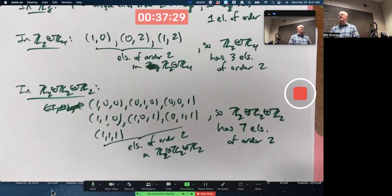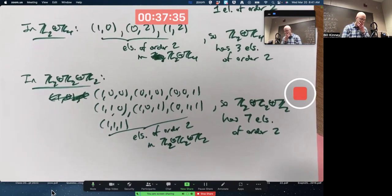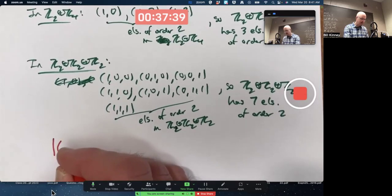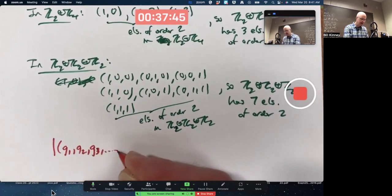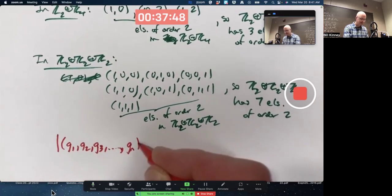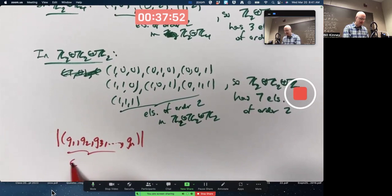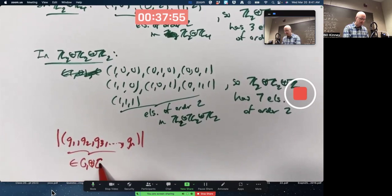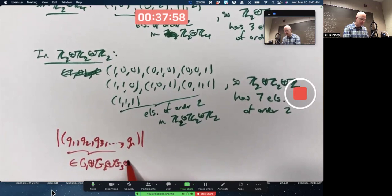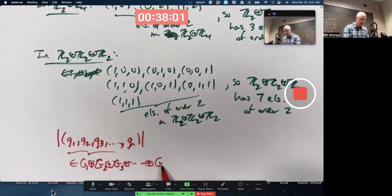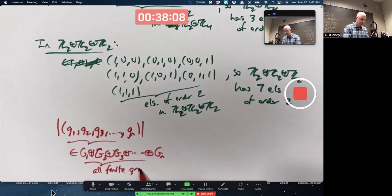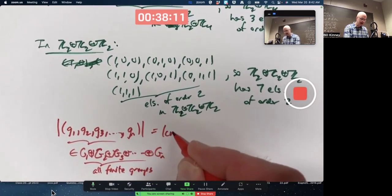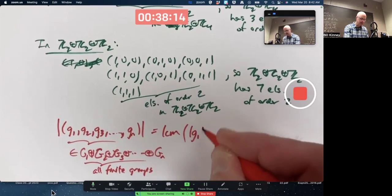You can also think about all this with the LCM property. I overheard some of you doing that. So in general, the order of an element of an arbitrary external direct product. This is an element of the external direct product of capital G1 with capital G2 with capital G3, etc. with capital Gn, where these are all finite groups, is equal to the LCM, least common multiple, of the orders of the individual components.